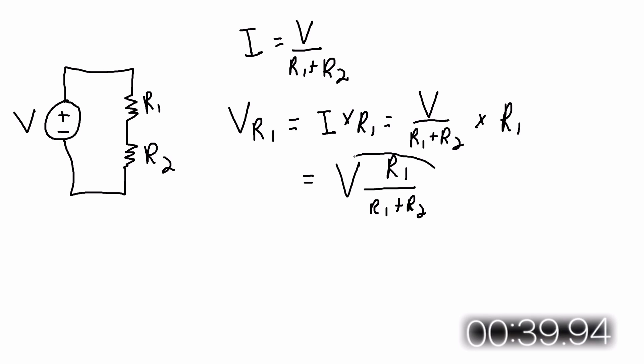It is more often written in this format, V times R1 over the total resistance. You can derive a similar equation for the voltage across R2.